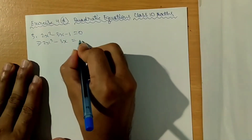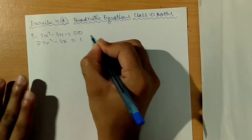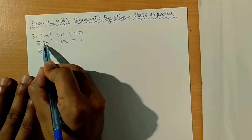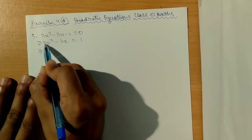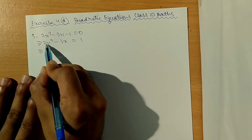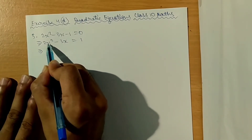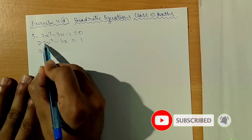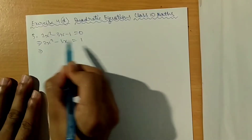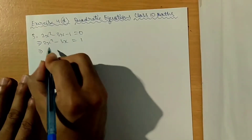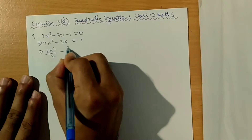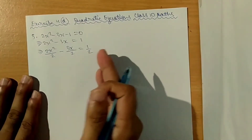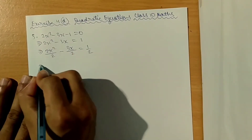This implies minus 1, and now we divide the entire equation by the coefficient of x squared. So we divide by 2. It will be 2x squared divided by 2, minus 3x divided by 2, and this is equal to 1 by 2 on the left-hand side and right-hand side.